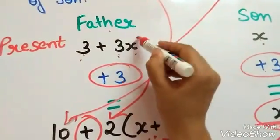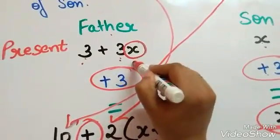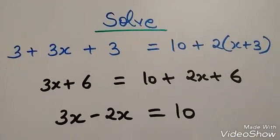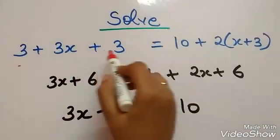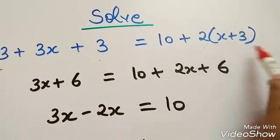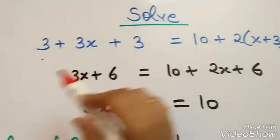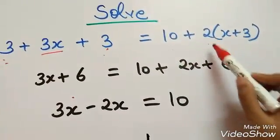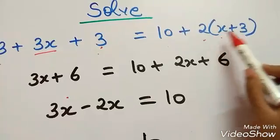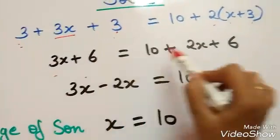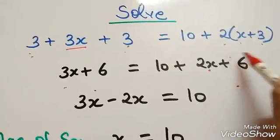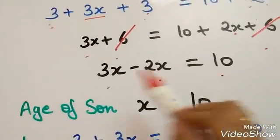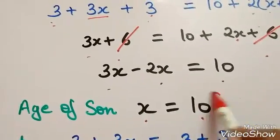When you get x, you can easily calculate the present age of father. Solving: 3x plus 6 equals 10 plus 2x plus 6. Then 3x minus 2x equals 10, and 6 cancels out. So 3x minus 2x equals 10, which gives x equals 10.